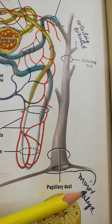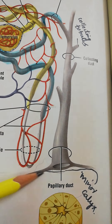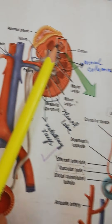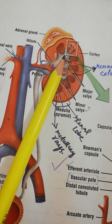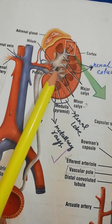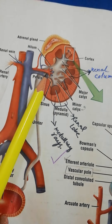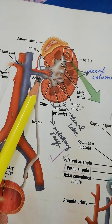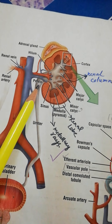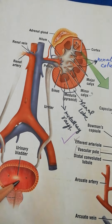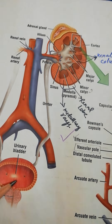The collecting duct becomes the papillary duct and opens into the minor calyces, which join to form major calyces, emptying into the renal pelvis and then the ureter, carrying urine to the urinary bladder.